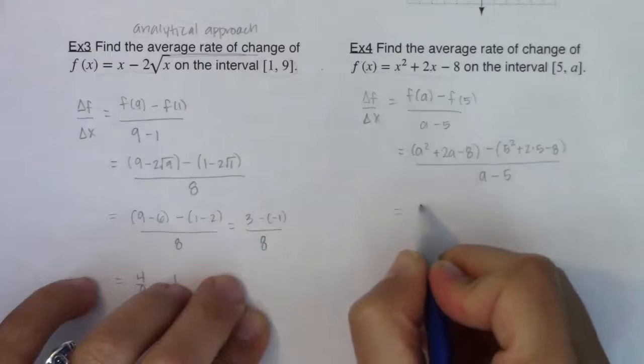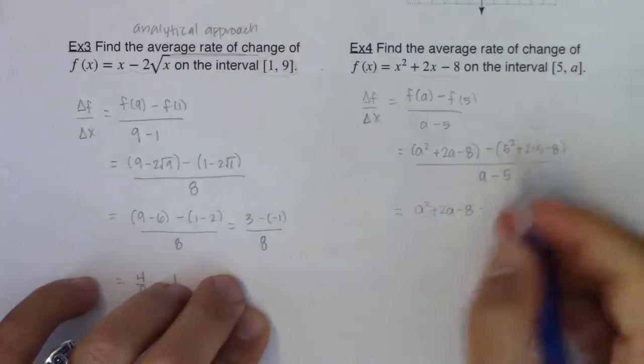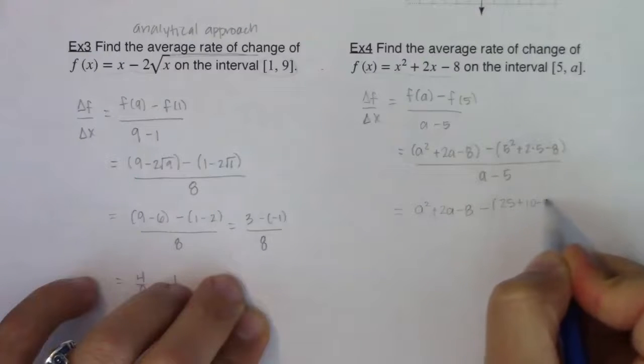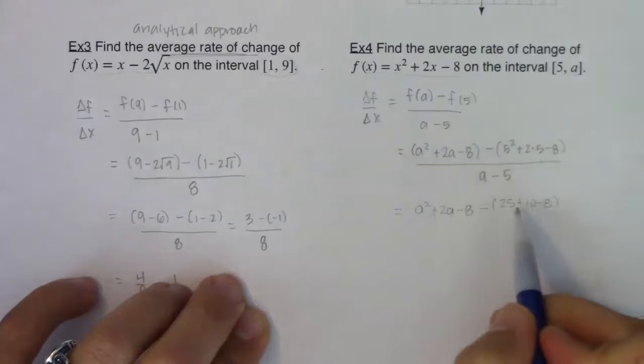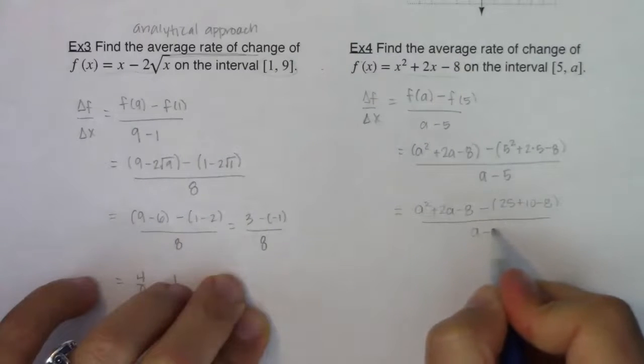All right, so let's do a little PEMDAS. So we got A squared plus 2A minus 8 minus, okay, so 5 squared is 25 plus 10 minus 8. So here we go. We've got, in ratio to A minus 5, right? Slopes are fractions, so I don't want to forget that denominator.